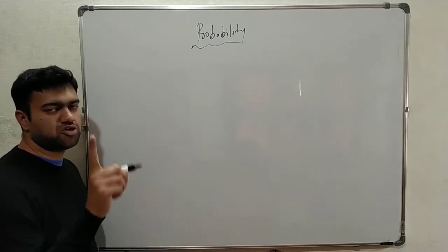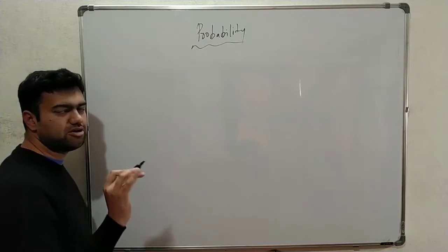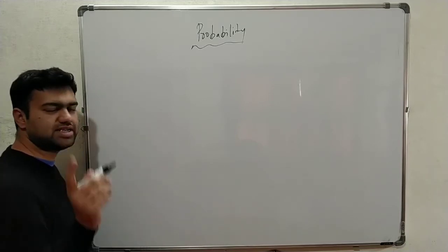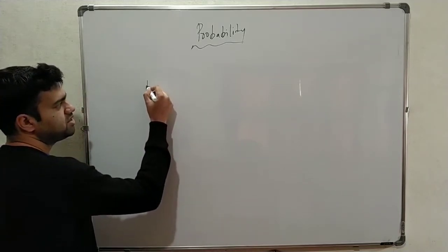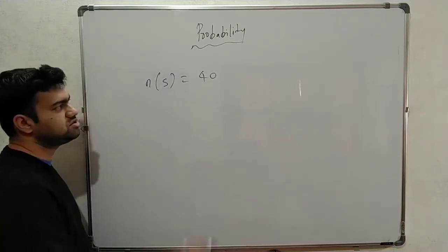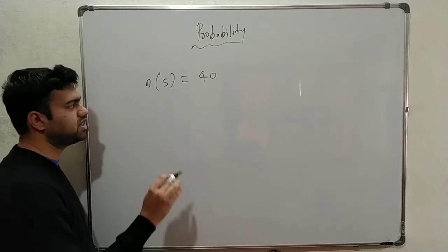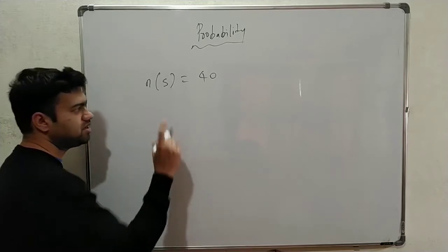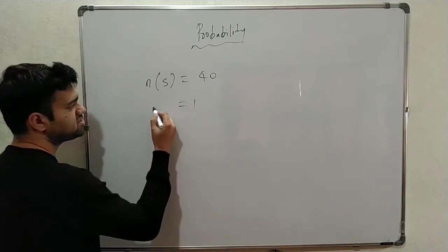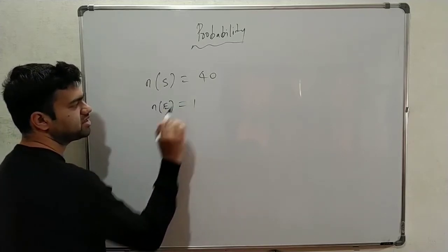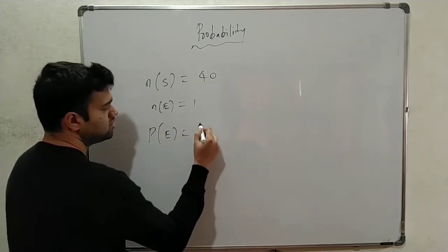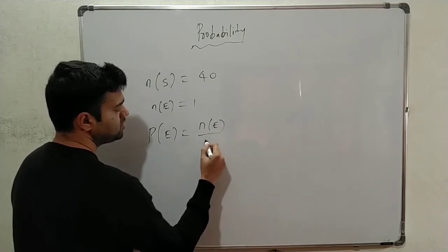There is an assumption: one is equal to the total. For example, the number of students in your class is 40. The probability of an event is equal to n(E) divided by n(S).